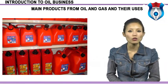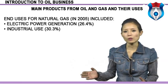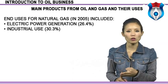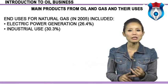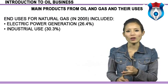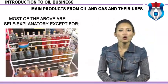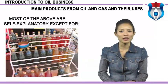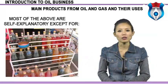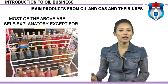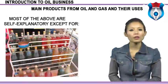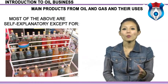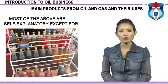Natural gas supplies about 22% of the nation's energy needs. End uses for natural gas in 2005 included electric power generation 26.4%, industrial use 30.3%, residential use 21.6%, commercial use 13.9%, lease and plant fuel consumption 5%, pipeline and distribution 2.6%, and vehicle use 0.1%. Lease fuel refers to natural gas used in well field and lease operations such as drilling operations, heaters, dehydrators, and field compression. Plant fuel is natural gas used as fuel in natural gas processing plants. Pipeline fuel is gas consumed in the operation of pipelines, primarily in compression. Natural gas is considered the cleanest-burning fossil fuel, producing mainly carbon dioxide, water vapor, and small amounts of nitrogen oxide.